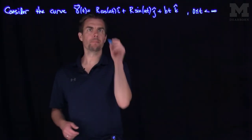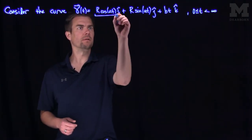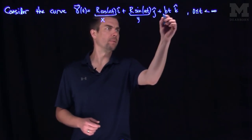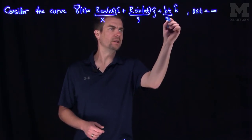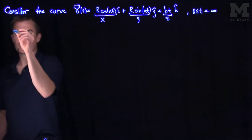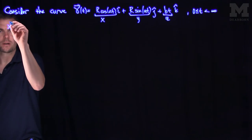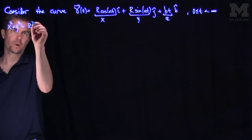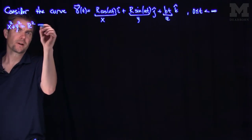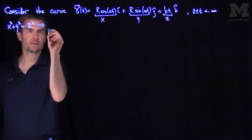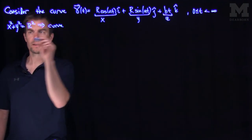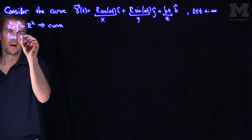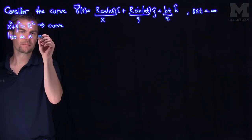If we look at the x and y components of this curve — that's my x, that's my y, and that's my z — we can notice that x squared plus y squared is equal to r squared, and that tells us that this curve lies on a cylinder.